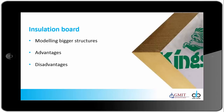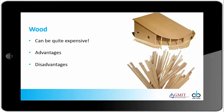Insulation board is similar to our modelling foam but it can be used for modelling bigger structures. You can often get this from building sites as waste material, which is very handy — it's an advantage when you get it for free. Wood can be quite expensive, but when you use wood you don't really have to finish it, which is advantageous. It shapes very well, but with larger sizes of wood you'd be talking about cutting with bandsaws, and not everyone is allowed to use a bandsaw in school.